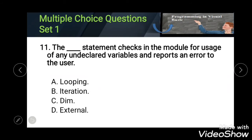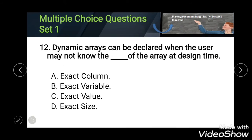Twelfth: dynamic array can be declared when the user may not know the blank of the array at design time. Options: Exact Column, Exact Variable, Exact Value, and Exact Size. The correct answer is Exact Size.